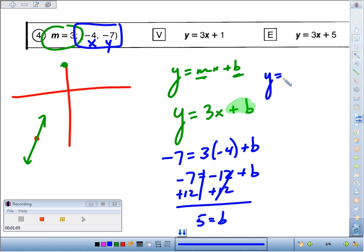Our full equation, the slope was given to us as three. We figured out the y-intercept was five.